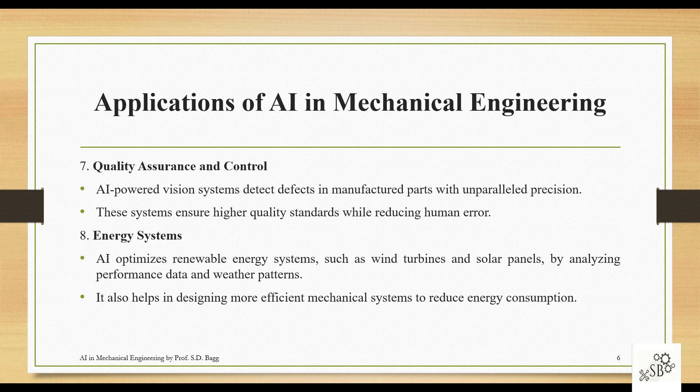AI also optimizes energy systems such as wind turbines and solar panels by analyzing performance data and weather patterns. It also helps in designing more efficient mechanical systems to reduce energy consumption. Based on the amount of sunlight and wind in a particular area, AI can predict performance and help get better results, making mechanical systems more energy-efficient.